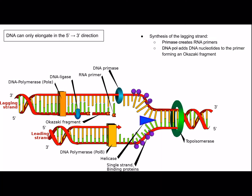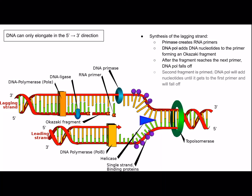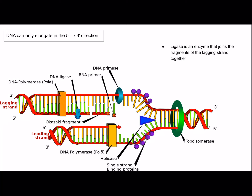DNA polymerase adds DNA nucleotides to the primer, forming an Okazaki fragment. After the fragment reaches the next primer, DNA polymerase falls off, the second fragment is primed, and DNA polymerase adds nucleotides until it reaches the first primer and falls off. Another DNA polymerase replaces the RNA primers with DNA. Ligase is an enzyme that joins the fragments of the lagging strand together — like glue. Topoisomerase is an enzyme that relieves the strain of untwisting at the replication fork.